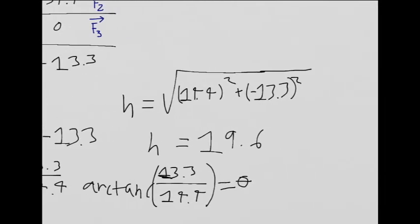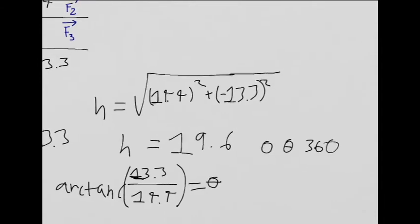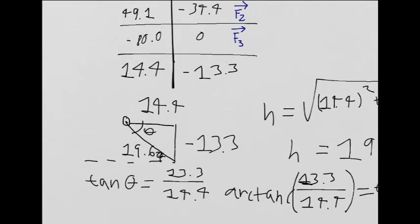And that comes out to about, well, theta is between 0 and 360. Right, there it is. It's in between them. So, since this is in quadrant 4, we know it's going to be really big.